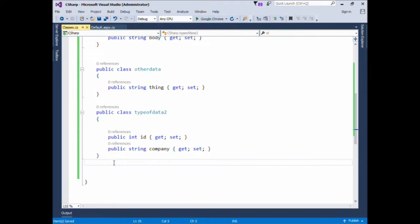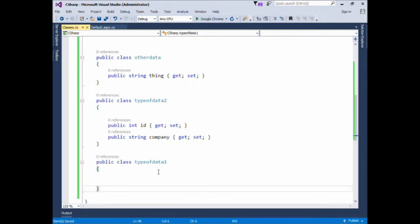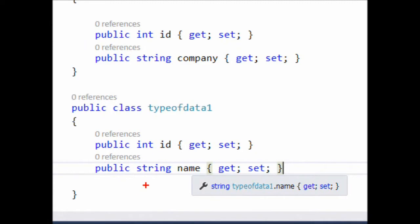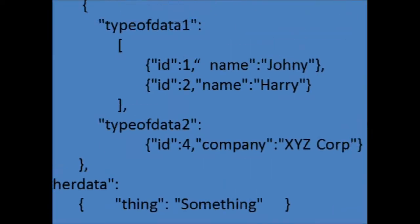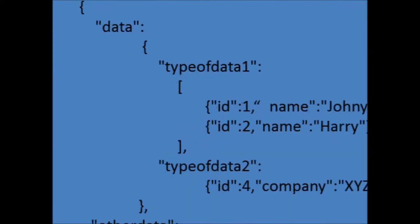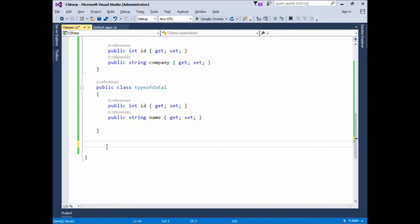We're trying to replicate the JSON structure with the help of classes. We're done with TypeOfData2, so now we'll create a class TypeOfData1, which is a list having records with ID and name fields. We'll create a class TypeOfData1 with two fields: ID and name. Finally, we're done with all the inner classes and will move to our main root element Data, incorporating all of these.